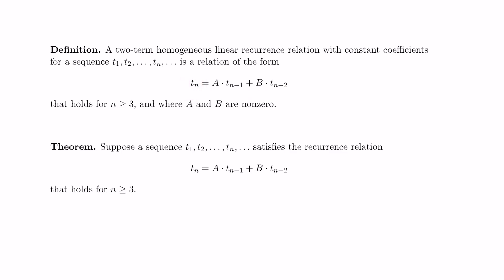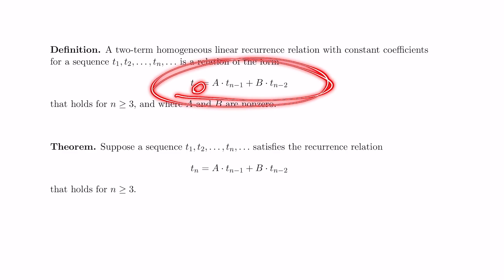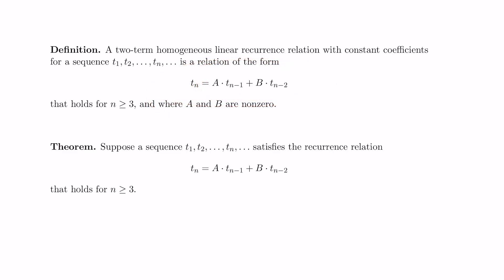For example, the Fibonacci sequence satisfies this. The nth term is the sum of the previous two terms, so a and b would be one here. The question we're going to ask is how do you develop an actual formula explicitly in terms of n for something like this? The theorem we're going to show is that you can actually figure out what the terms will look like in terms of n straight from these coefficients a and b themselves.